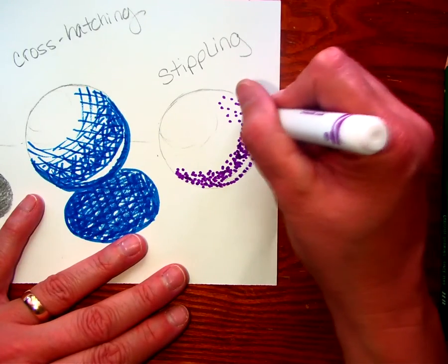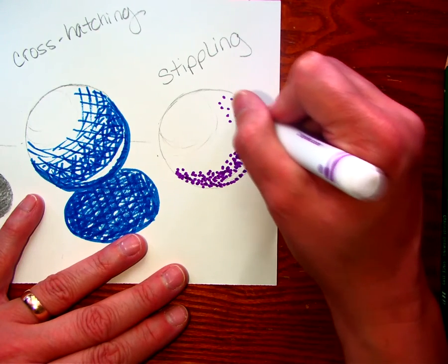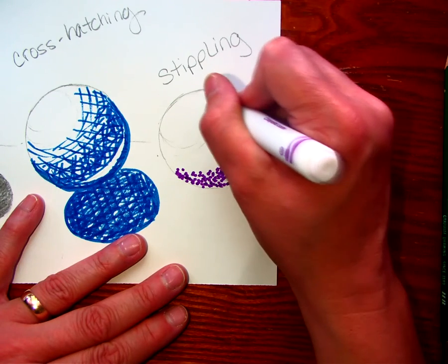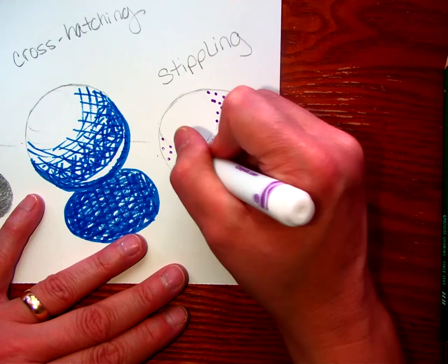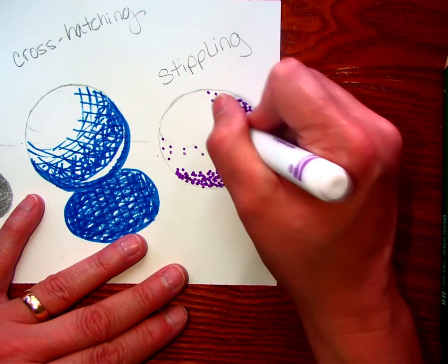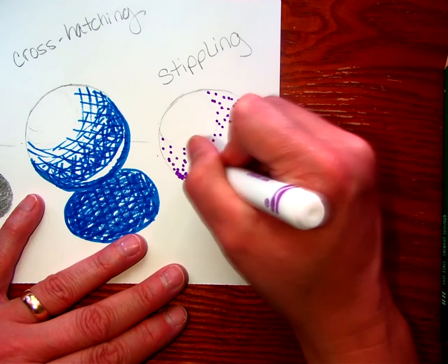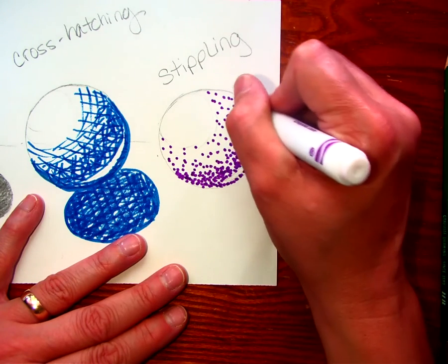Just because markers are more of a flat color. And they don't really allow you to get that kind of shading with it. But anything that you can blend, like chalk pastels, oil pastels, or any of those types of media, charcoal, you can do that. With any of those that will allow you to blend them.